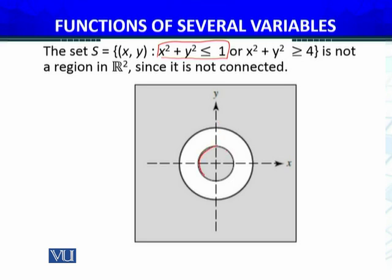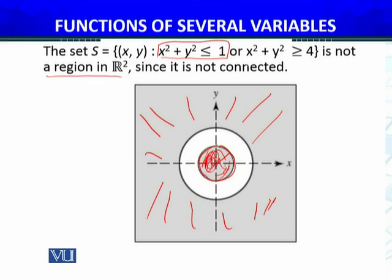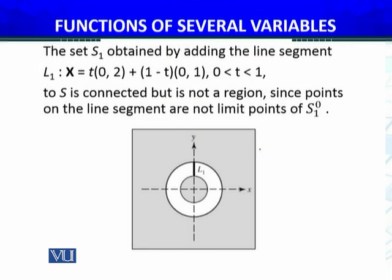This circle which is radius 1 from the origin has boundary points and interior points. All these points which are shaded, or x square plus y square greater than or equal to 4, you make radius 2 circle. Outside the points, these points are set in S. Is not a region in R2. This region is not a region in R2 since it is not connected.